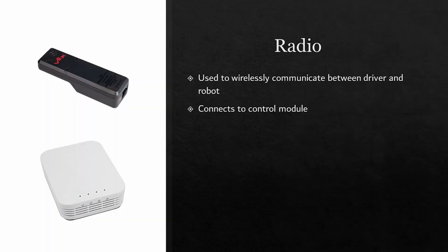The radio is how drivers can wirelessly communicate with the robot while it is on the field. These are connected to the control module of the robot so that it can process incoming signals from the drivers.